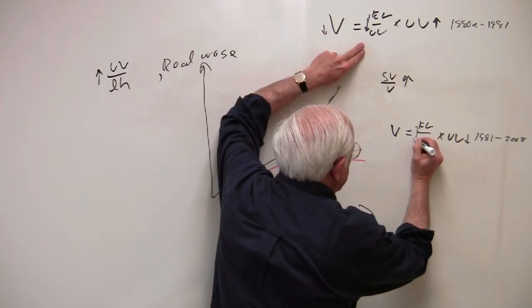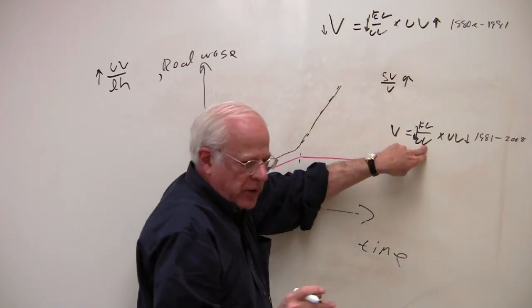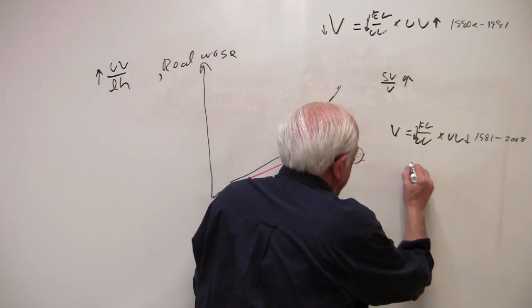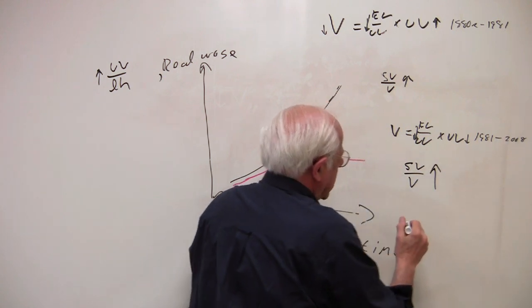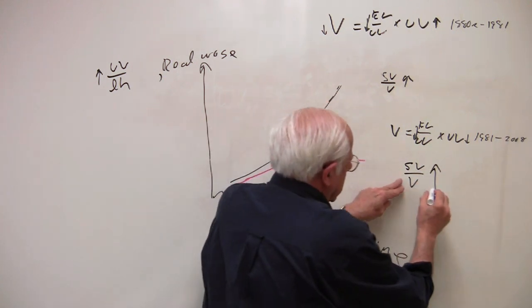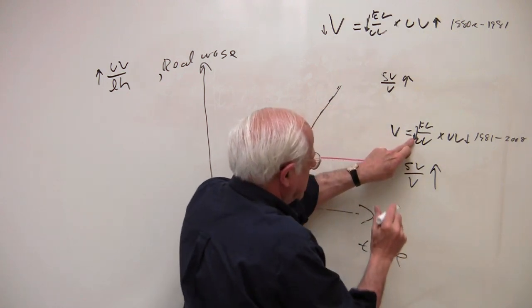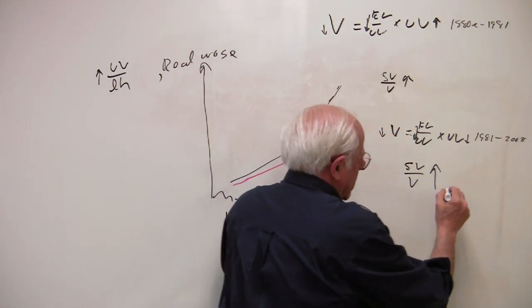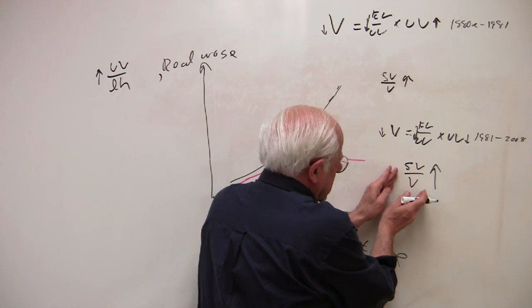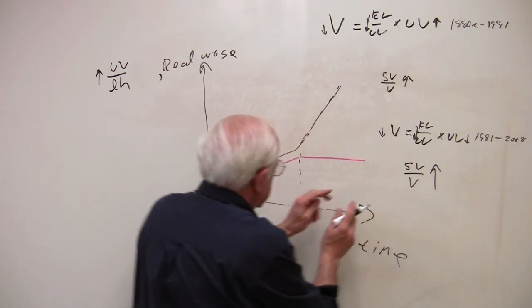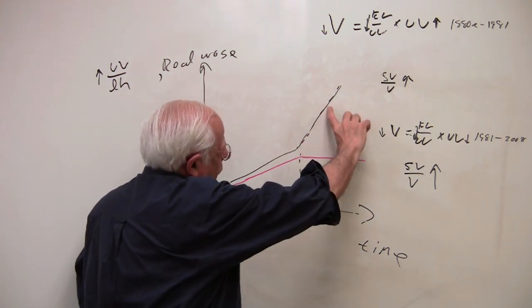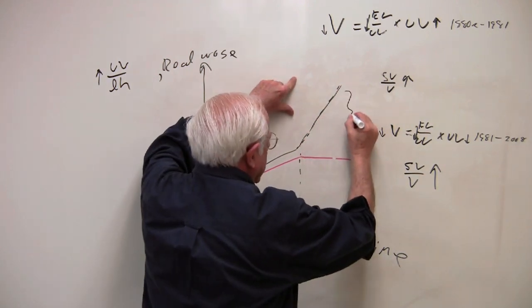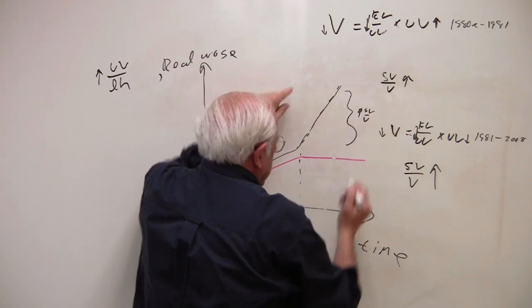At the same time, this continues to fall in part because of these cheap Chinese wage goods, but also the continual rise in the productivity of labor. Hence the S over V kind of takes off in the United States this time around because of the decline in the real wage added to this decline in the unit value of wage goods. So this is a dramatic increase in the rate of exploitation in the United States which you can see from the rising gap between the black and the red lines.